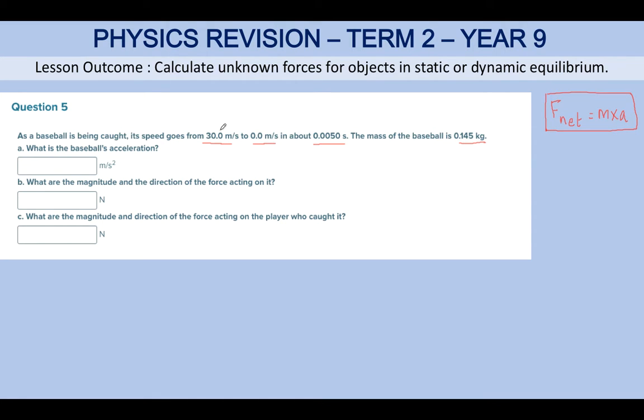What do we do first? Label all the quantities: this is your initial speed, this is your final speed, this is in seconds so that gives you the time, and this is the mass. These are all the quantities given in the question.